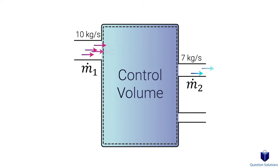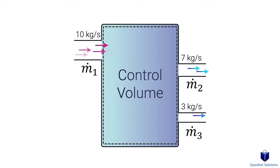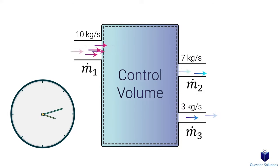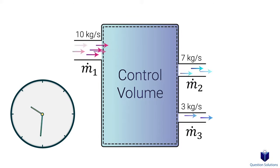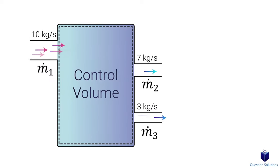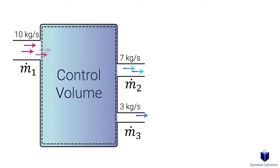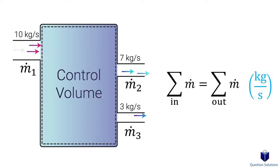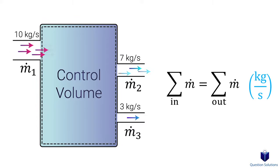One exit has a flow of 7 kilograms per second, and the other 3 kilograms per second. The mass flow entering is not equal to a single exit, but if we look at each individual flow, none of them change with time. The entering flow remains at 10 kg/s, the top exit at 7 kg/s, and the bottom at 3 kg/s. If we sum the mass flow coming in and sum the mass flow leaving, those two will be equal. Each inlet and outlet has a steady mass flow rate.